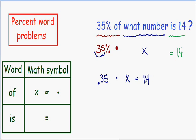So now we just need to solve for x and get it by itself. Since the .35 is being multiplied by x, to get x by itself we can divide both sides by .35. On the left hand side, the .35s cancel out. And the only thing we're left with is x equals 14 over .35. So now I'm just going to use my calculator and divide 14 by .35. 14 divided by .35 is 40.